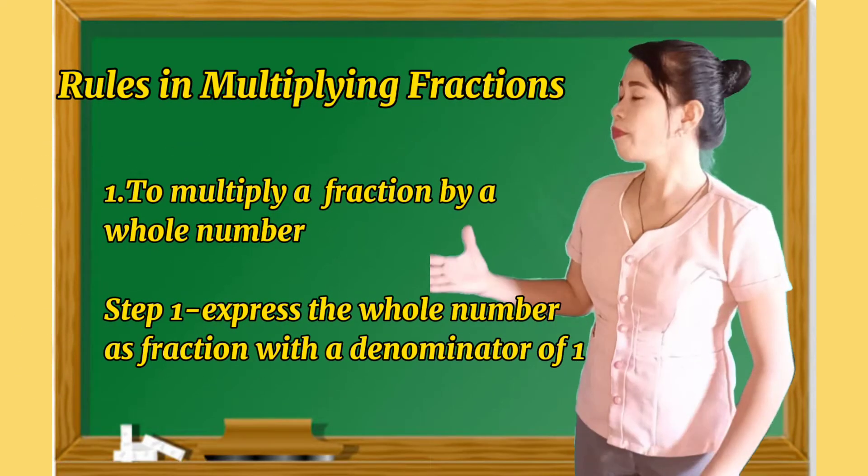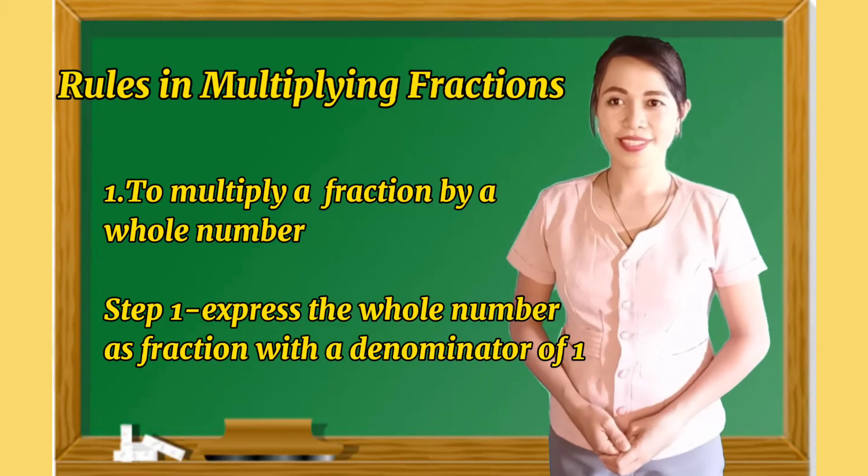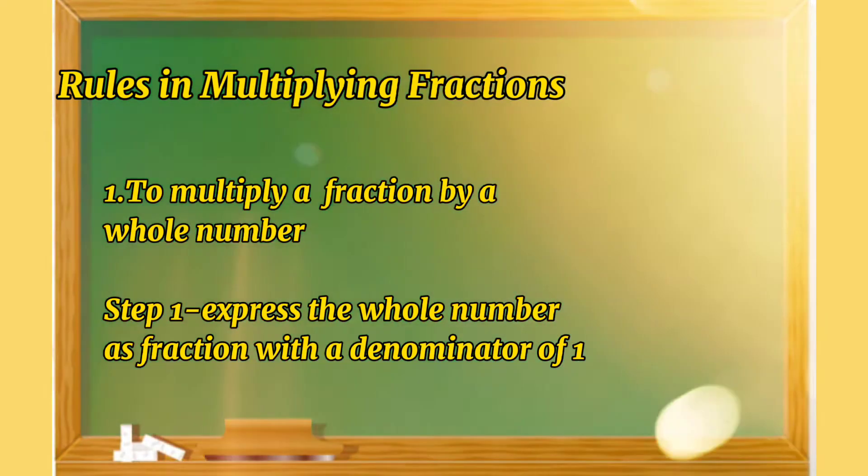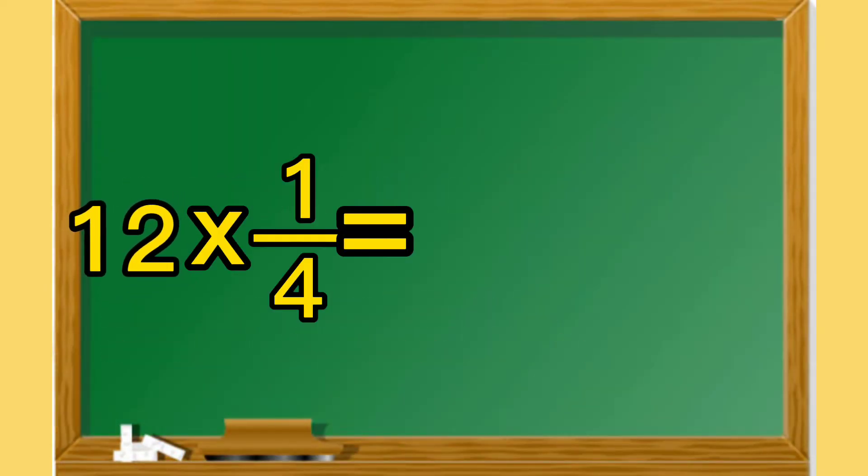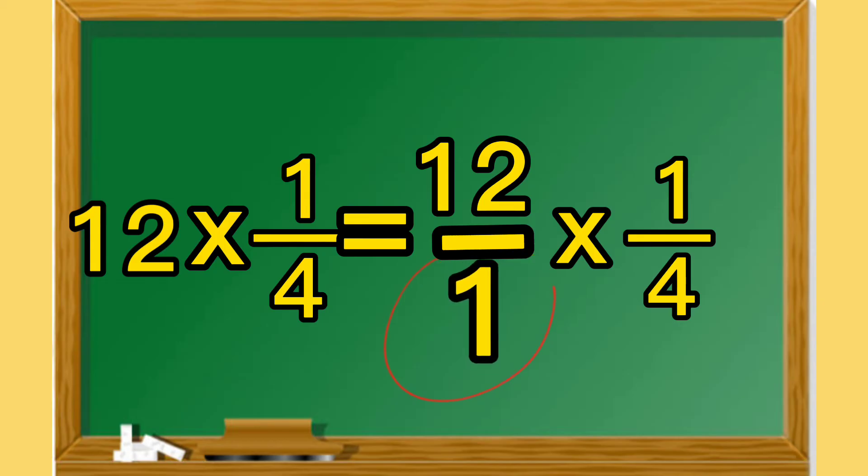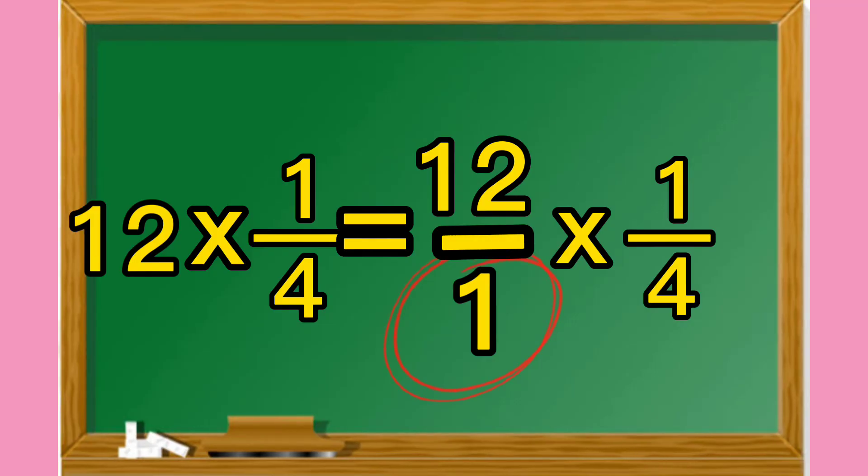Rule number one, to multiply fraction by a whole number. Here are the steps to follow. Step number one, express the whole number as a fraction with a denominator of one. Let's say, for example, from the given problem above, our whole number here is twelve. So we just express this as a fraction with a denominator of one. So why one? That is because whenever we divide twelve by one, the result is twelve. So always remember, if the given is whole number, just put one as their denominator.